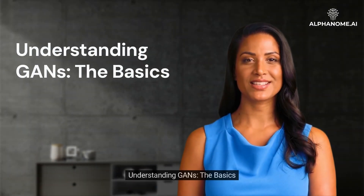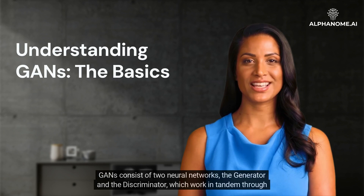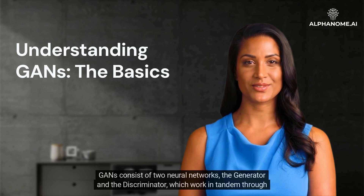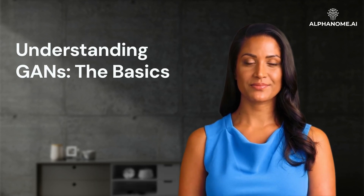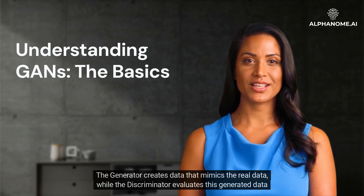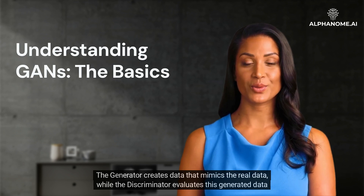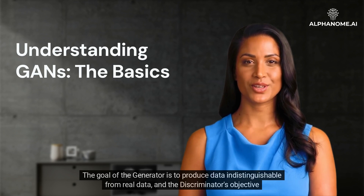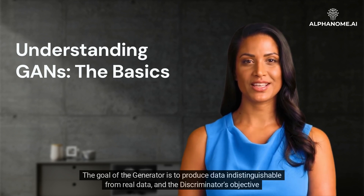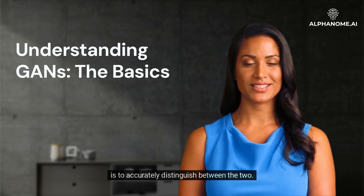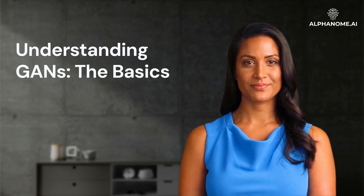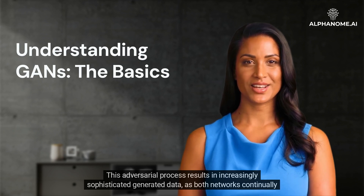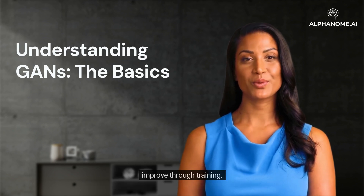Understanding GANs: The Basics. GANs consist of two neural networks — the generator and the discriminator — which work in tandem through a competitive process. The generator creates data that mimics real data, while the discriminator evaluates this generated data against actual data. The goal of the generator is to produce data indistinguishable from real data, and the discriminator's objective is to accurately distinguish between the two. This adversarial process results in increasingly sophisticated generated data as both networks continually improve through training.